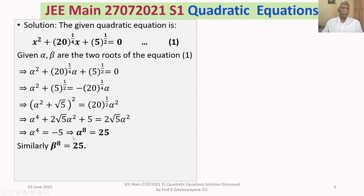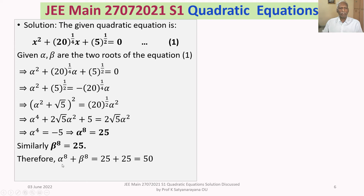Similarly, beta is also a root of the equation. Therefore, beta satisfies all these steps, and ultimately we get beta to the power 8 equals 25. Adding the two results, we get alpha power 8 plus beta power 8 equals 25 plus 25, which equals 50. That's your answer.